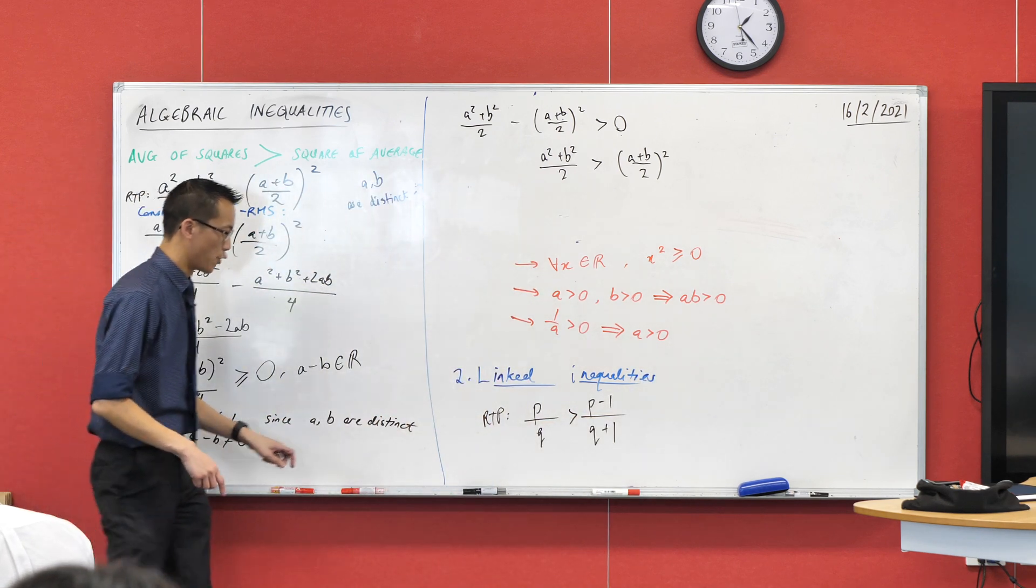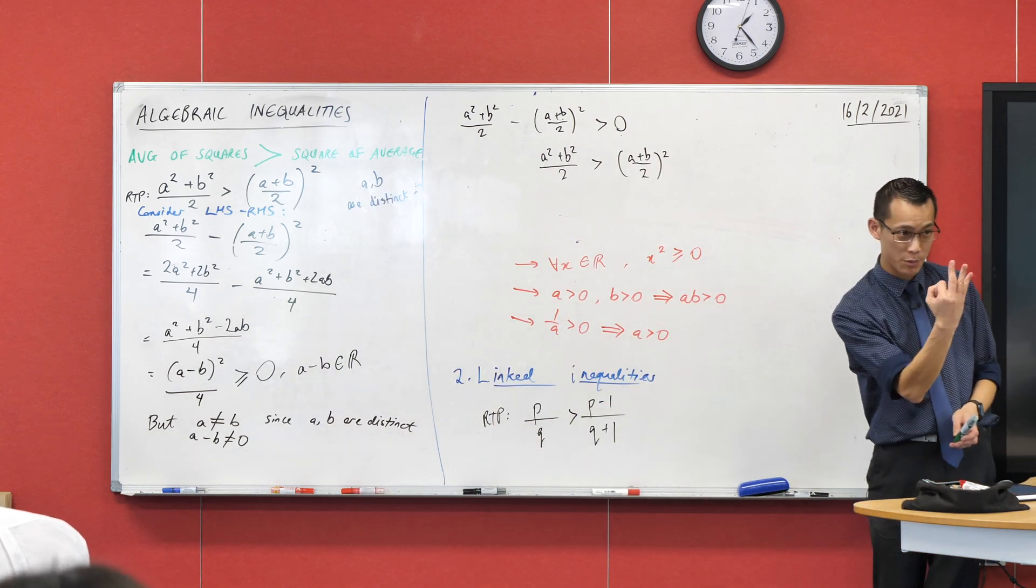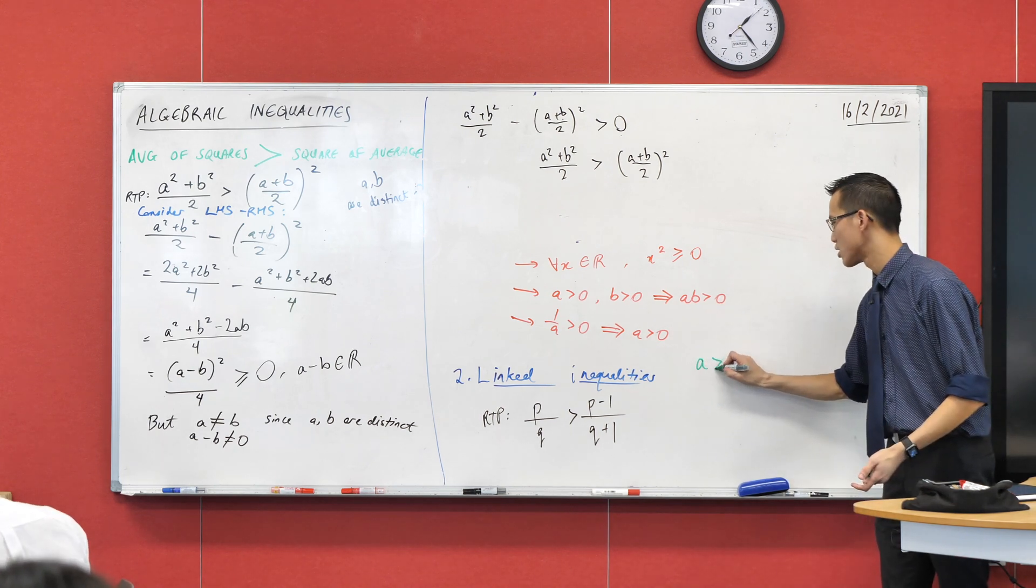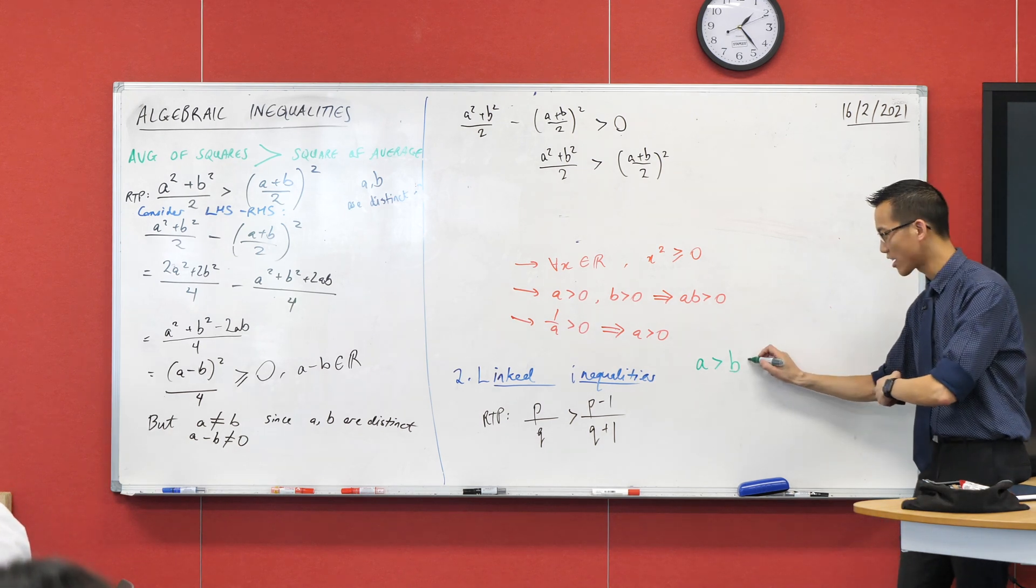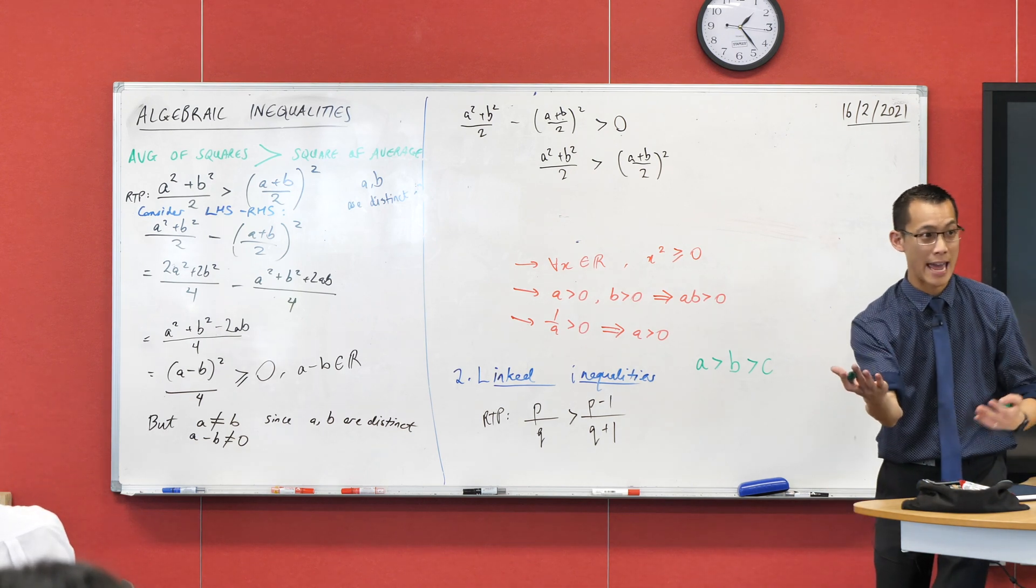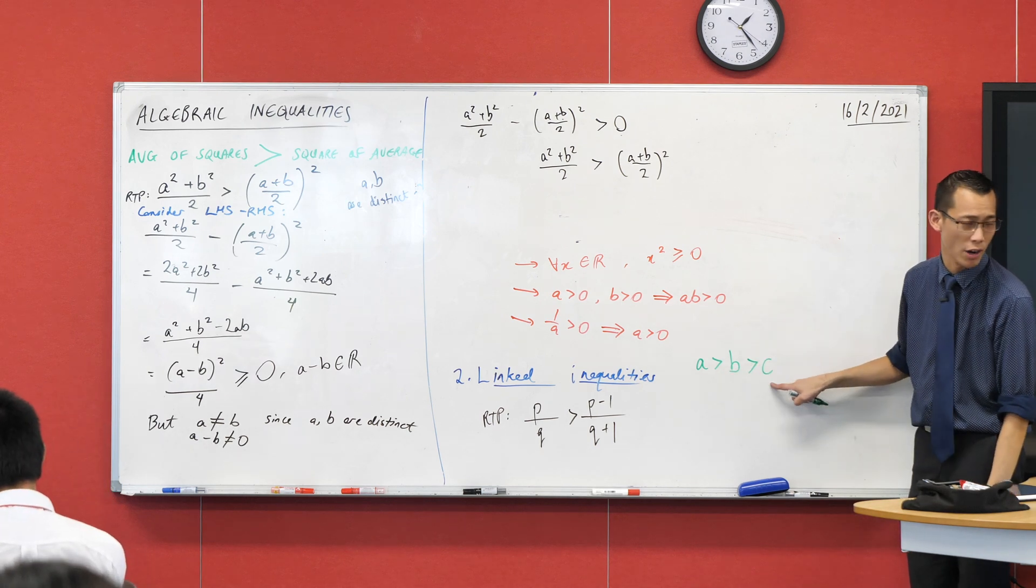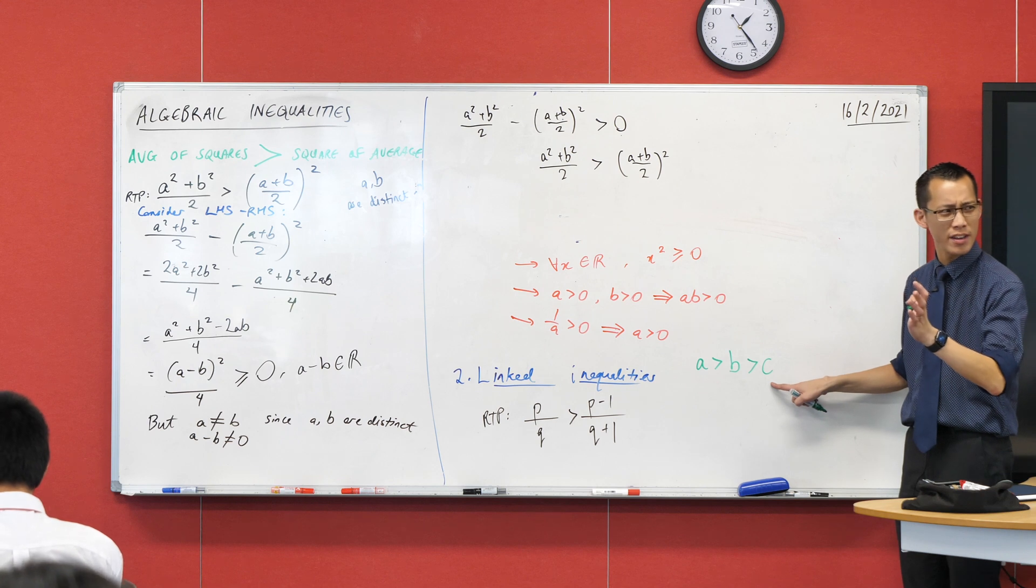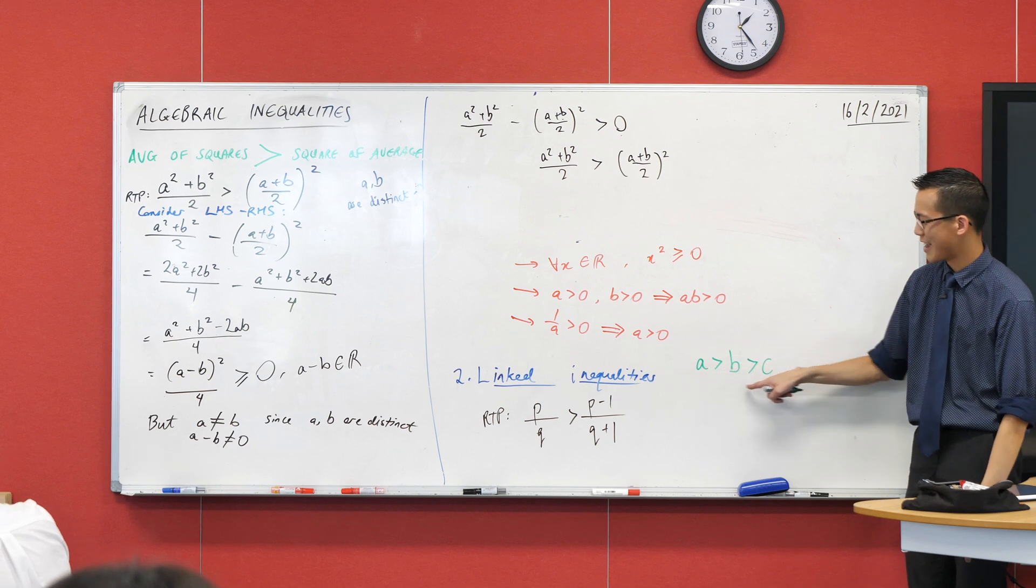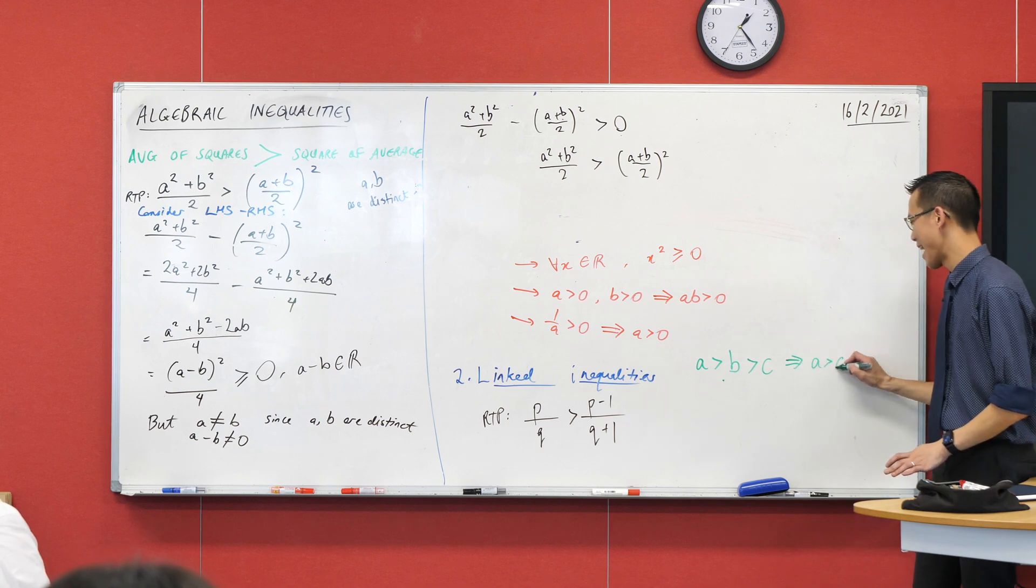If you've got three objects - three mathematical numbers, functions, whatever - and you know their order. For instance, if A is greater than B and that in turn is greater than C, what can you tell me about the relationship between A and C? Yeah, A is bigger than C. This implies A is greater than C.